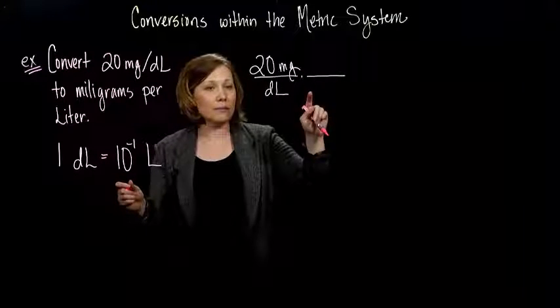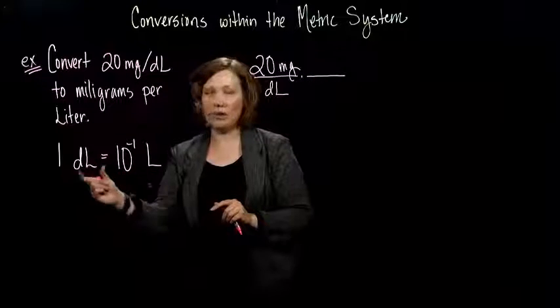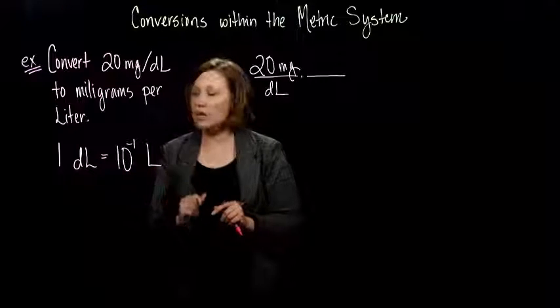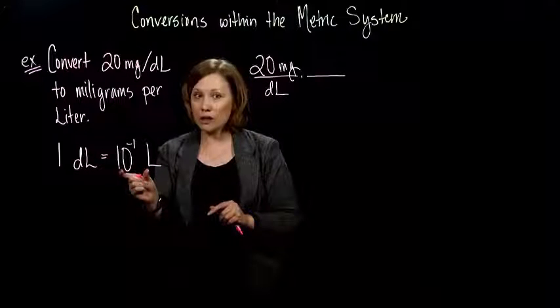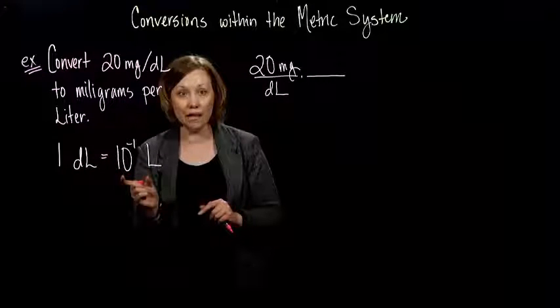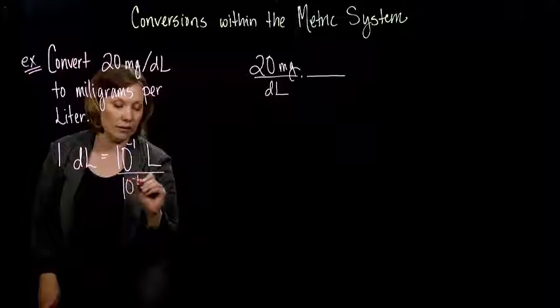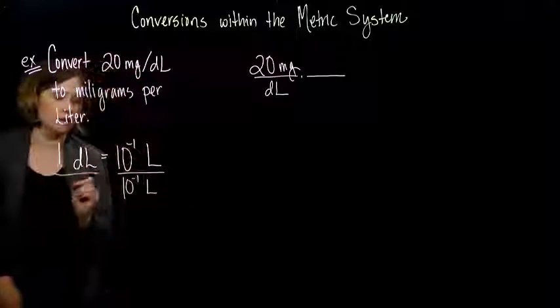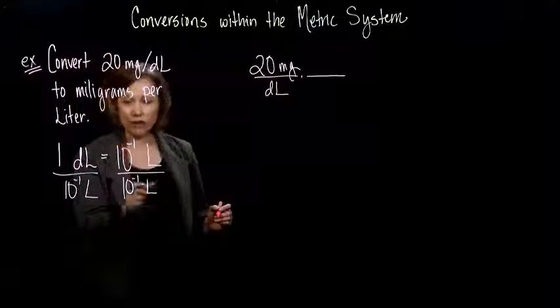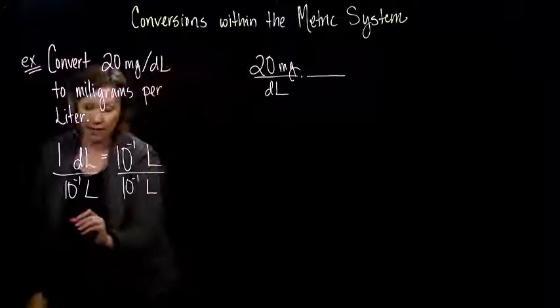So, I'm going to multiply by something equivalent to 1 that has deciliters on the top. So, I look at the equivalents I have, 1 deciliter equals 10 to the negative 1 liters. So, I want deciliters on the top and liters on the bottom. So, if I divide this fraction by 10 to the minus 1 liters, my deciliters stay on the top over here.